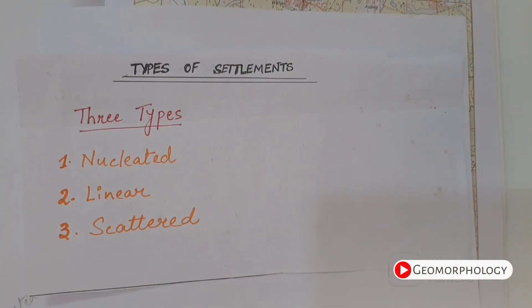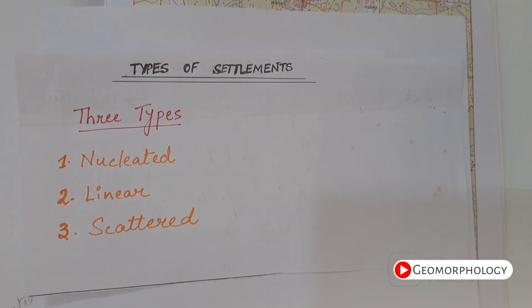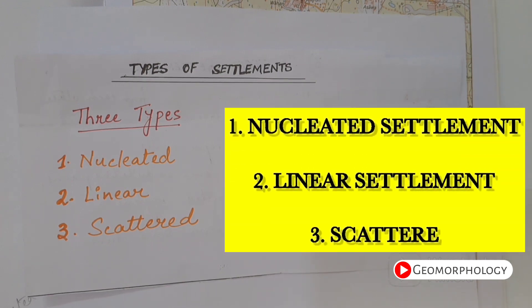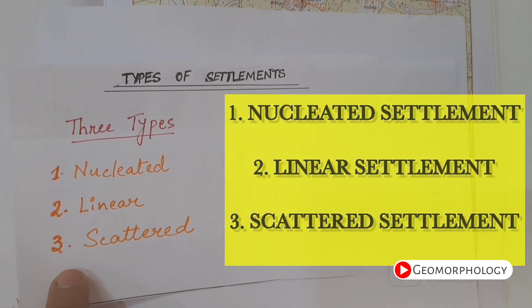Hello everyone, welcome to our channel. Today we will be learning about the types of settlements and then identify these types of settlements on the topographical map. Settlements are of three types: the nucleated settlement, the linear settlement, and the scattered settlement.